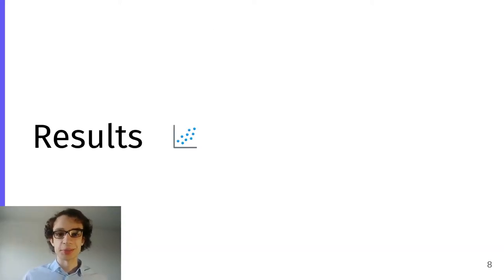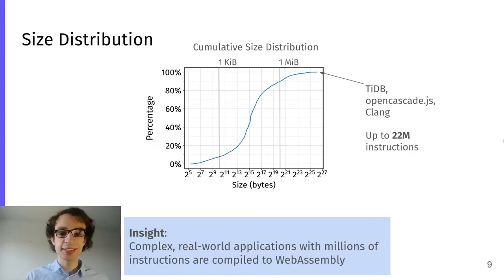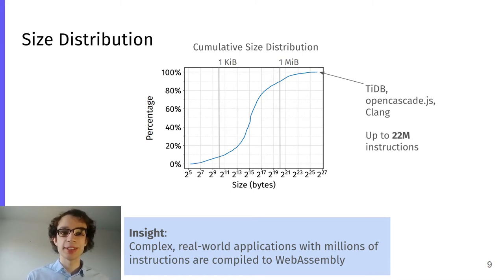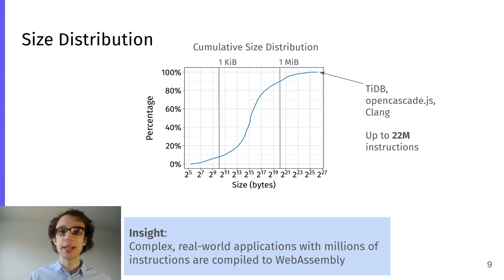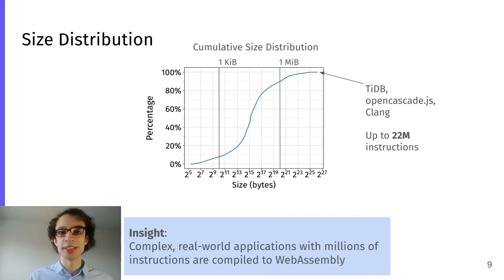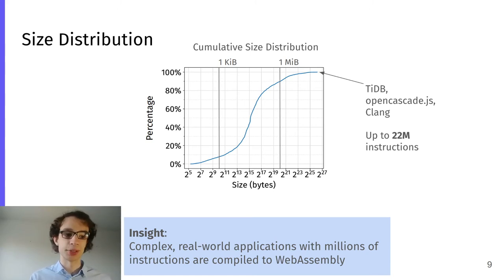Now let's take a look at some results. Here you can see a size distribution of our dataset. The median binary is about 37 kilobytes. There are also some very large binaries — for example, TIDB, which is a database compiled to WebAssembly, OpenCascade.js, which is CAD software compiled to WebAssembly, and there's also the full Clang compiler as a binary. These programs have up to 22 million instructions. The insight here is that complex real-world applications with millions of instructions are already compiled to WebAssembly.